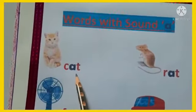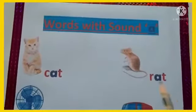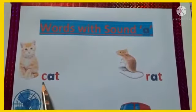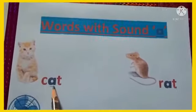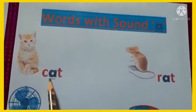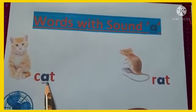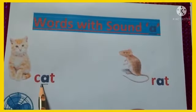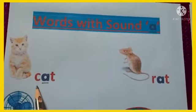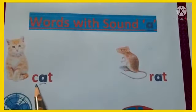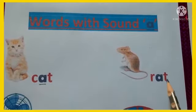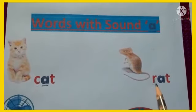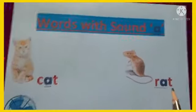When we say cat and rat, what sound do we hear? Cat — A. The sound of A is heard. A is in the middle: C, A, T — Cat. A is in the middle and we get the sound A. Same with Rat — R, A, T.